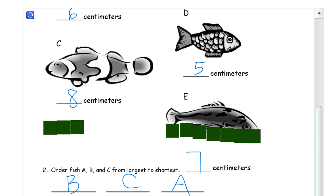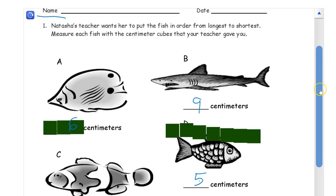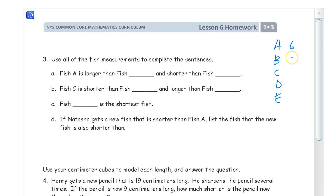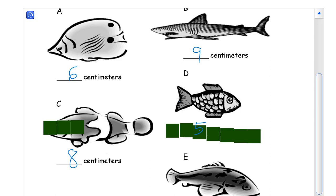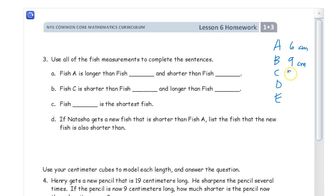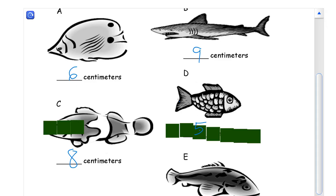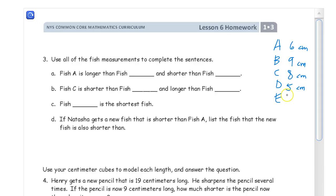So we've got fish A, B, C, D, and E. Let's go back and look at those fish and see what they were. A was 6, B is 9, and these are centimeters. CM is the abbreviation. Then C is 8, D was 5, and fish E was 7.